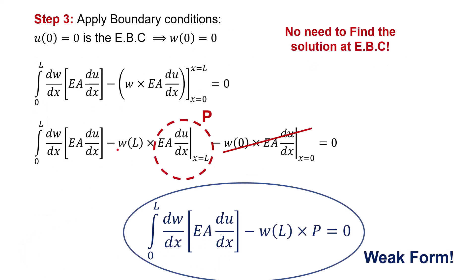The third step in finding the weak form is to apply the boundary conditions. At the left end, x equal to 0, we have an essential boundary condition. Since we already know the exact value of the solution at this point, there is no need to approximate it. This means the weighting function w(x) must also be 0 at x equal to 0. So we say w(0) is 0.